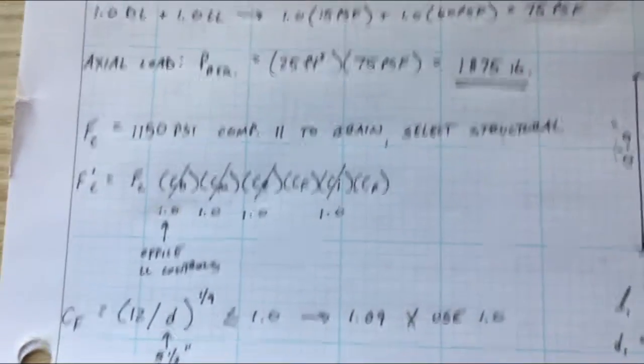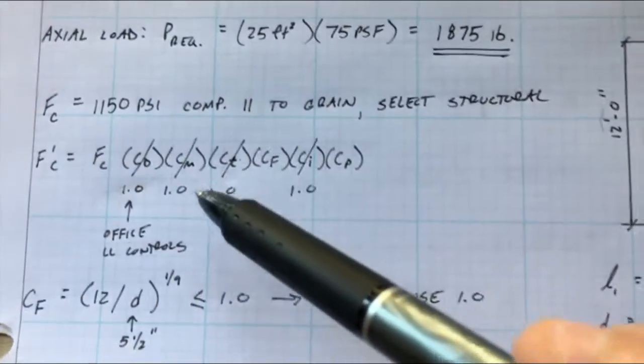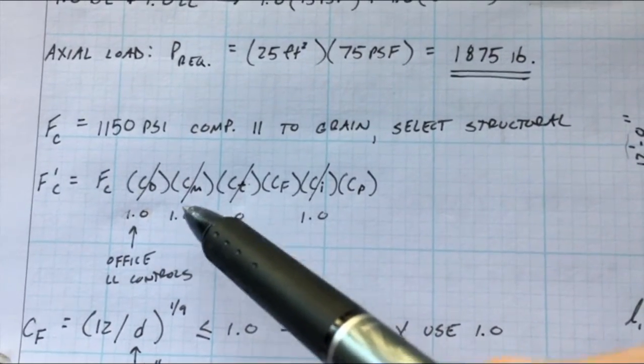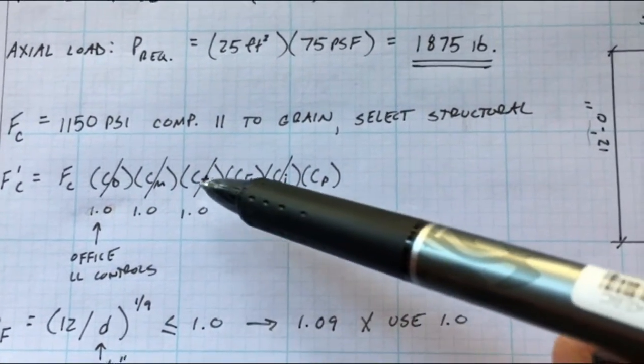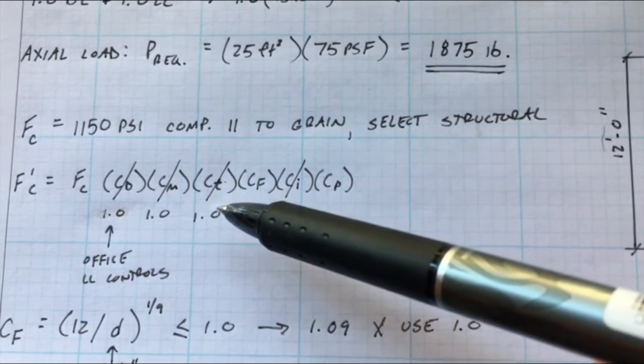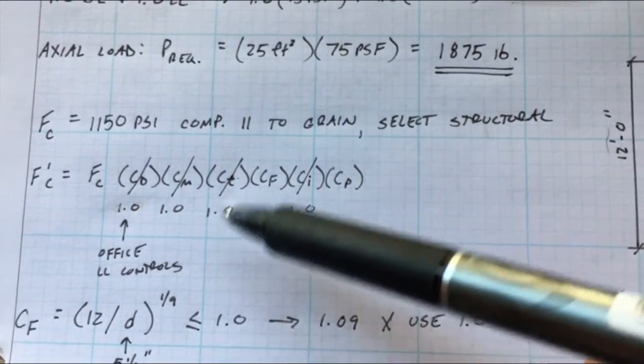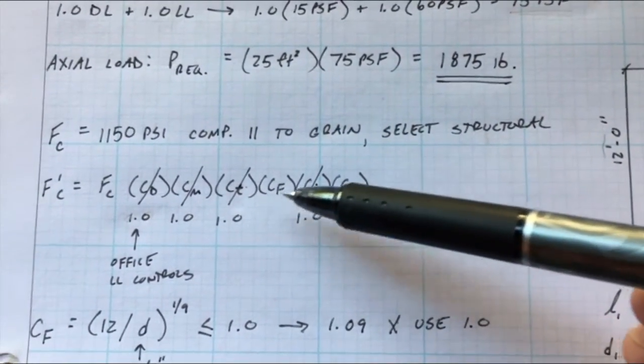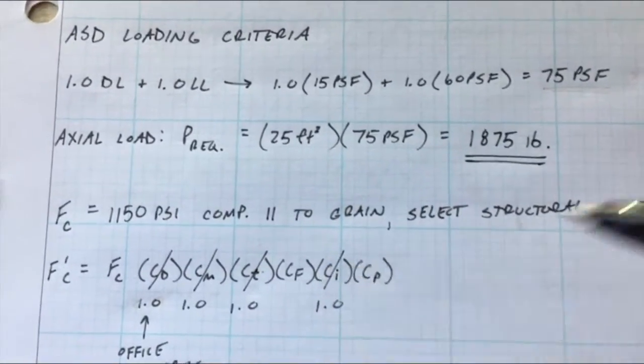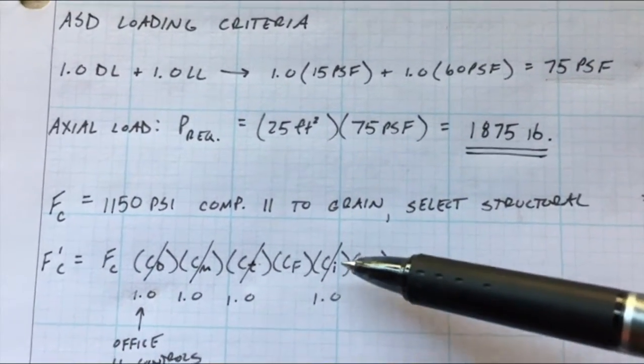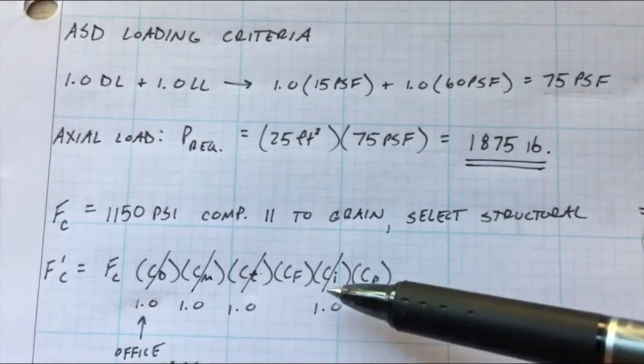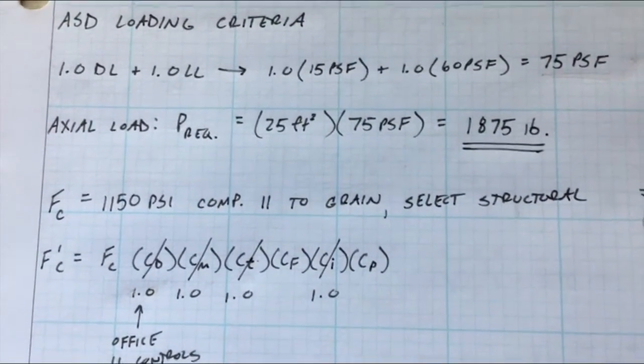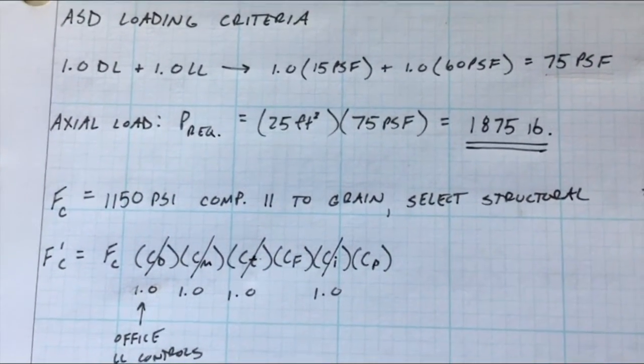So that's 1.0. CM is our moisture factor. We're going to assume it's an interior column so moisture will be controlled with HVAC systems and all of that, so it'll be a conditioned space, so 1.0 there. C sub t is your temperature factor, again indoors so no extreme temperatures, it'll be conditioned space, 1.0. You have a CF factor which we'll calculate below. You have your incising factor which is 1.0.